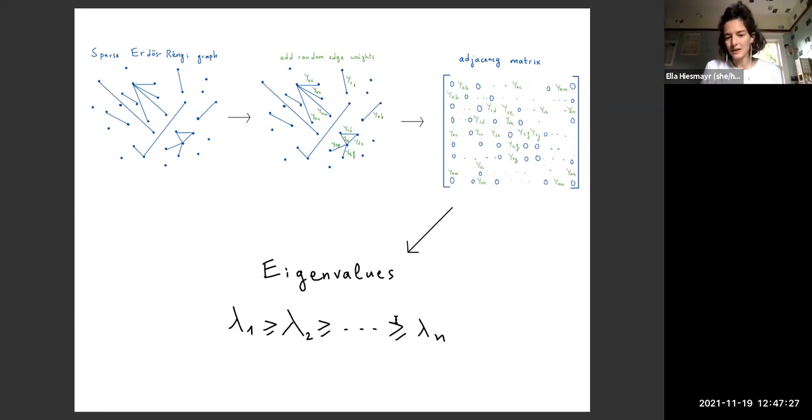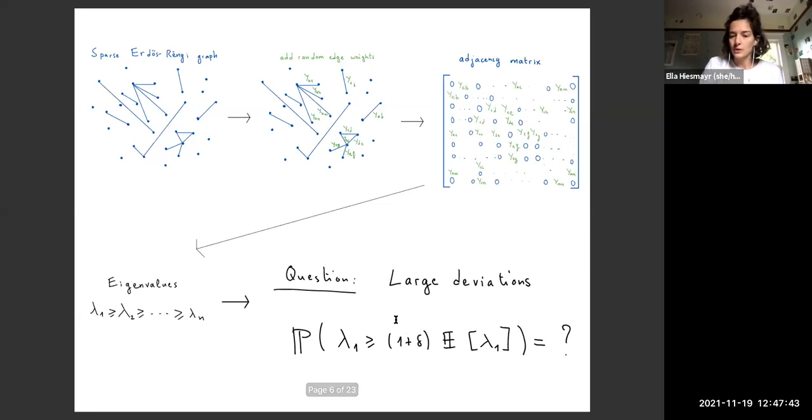This adjacency matrix is symmetric because it comes from this graph, which implies that the eigenvalues are real and we can order them. Now we can ask about these eigenvalues, how they behave in a typical regime. For instance, like derive some law of large numbers. But in our case, we want to ask about the atypical regime. The question we want to ask is about large deviations of the largest eigenvalue.